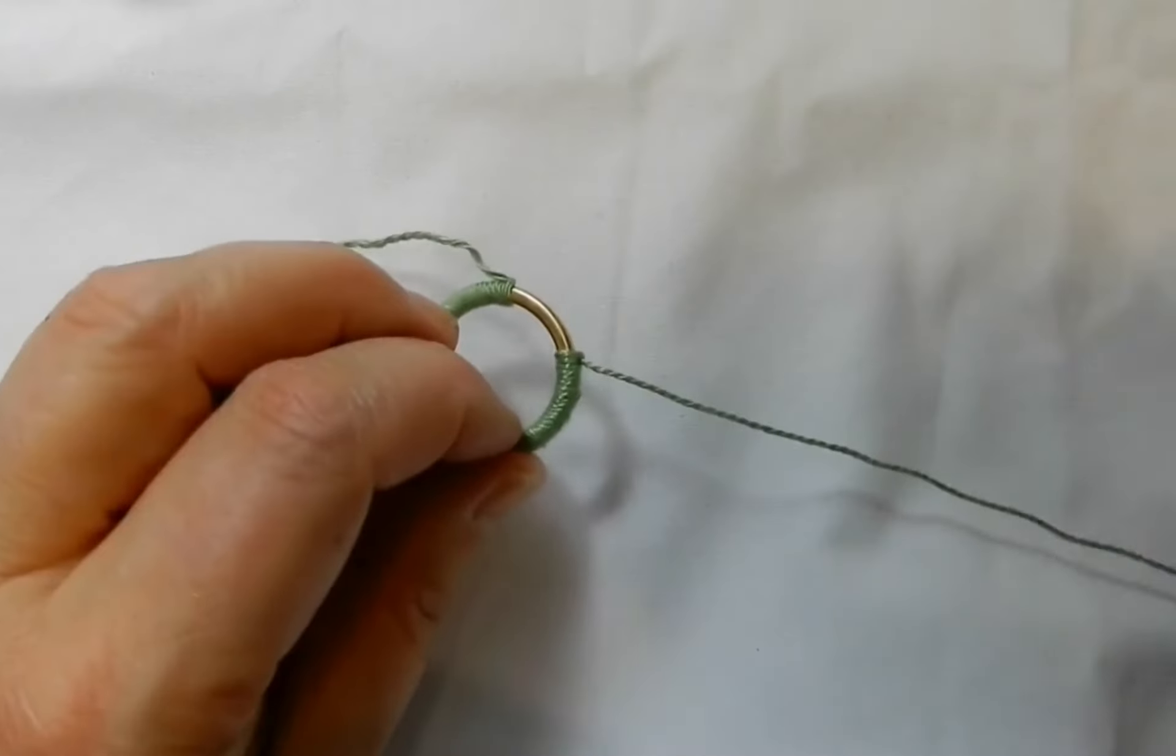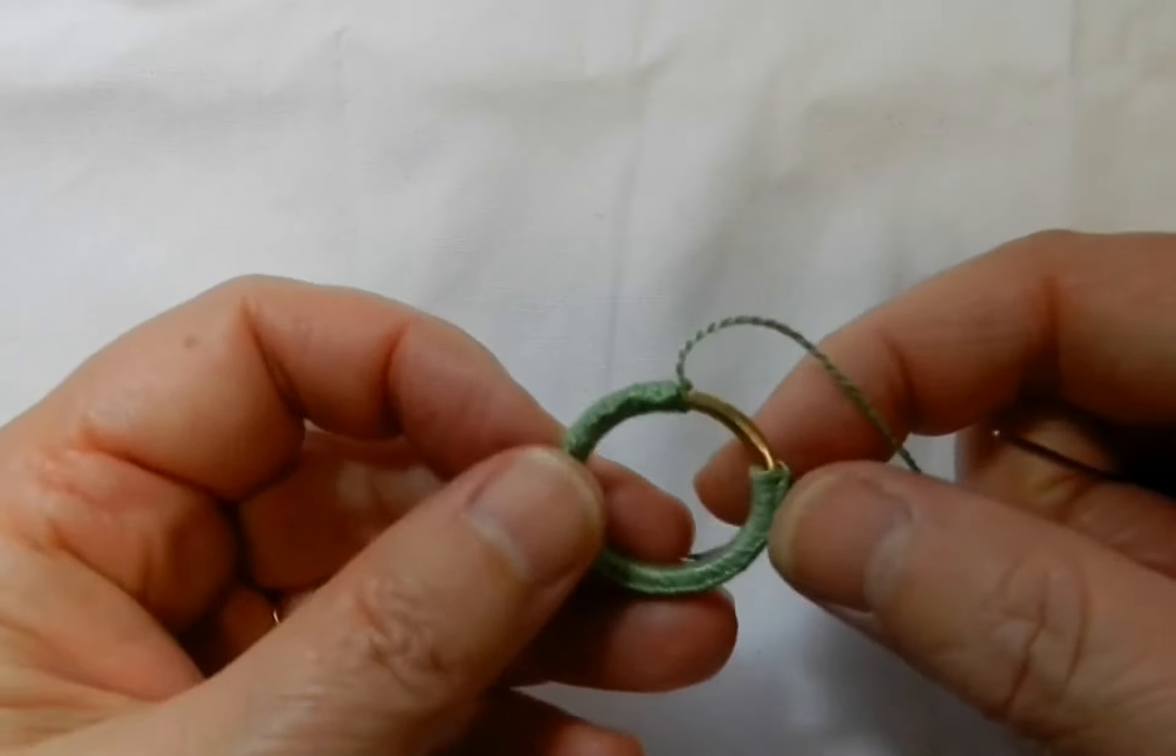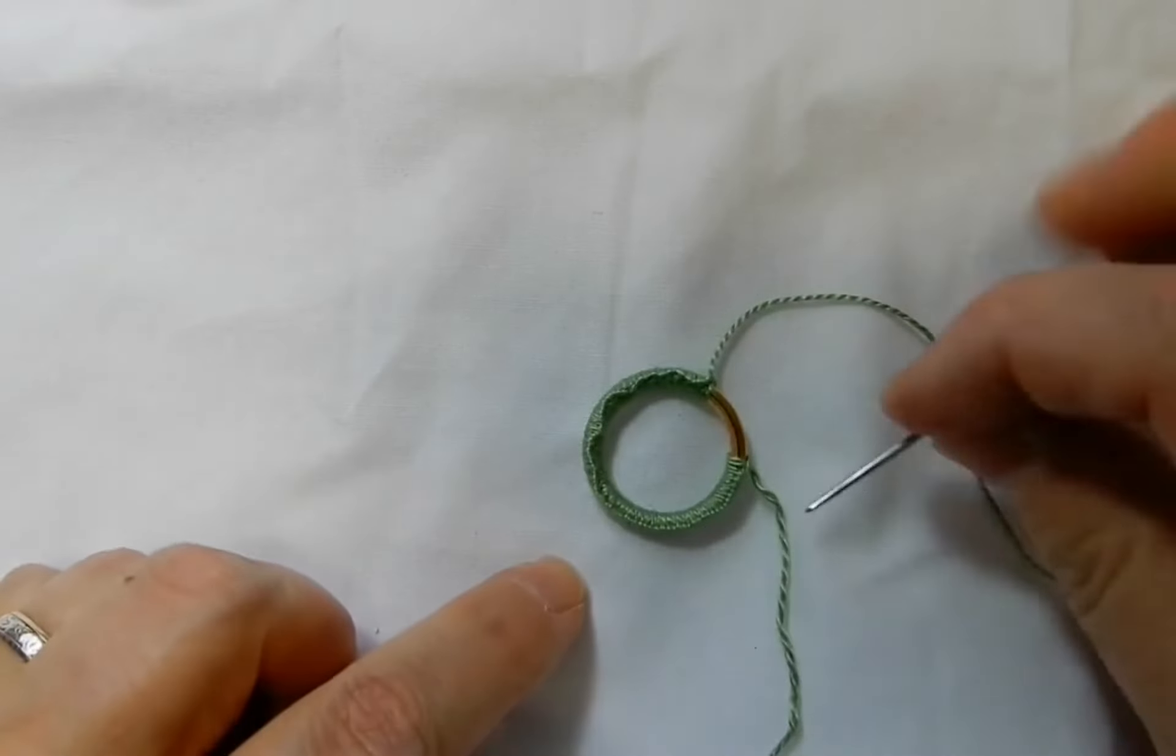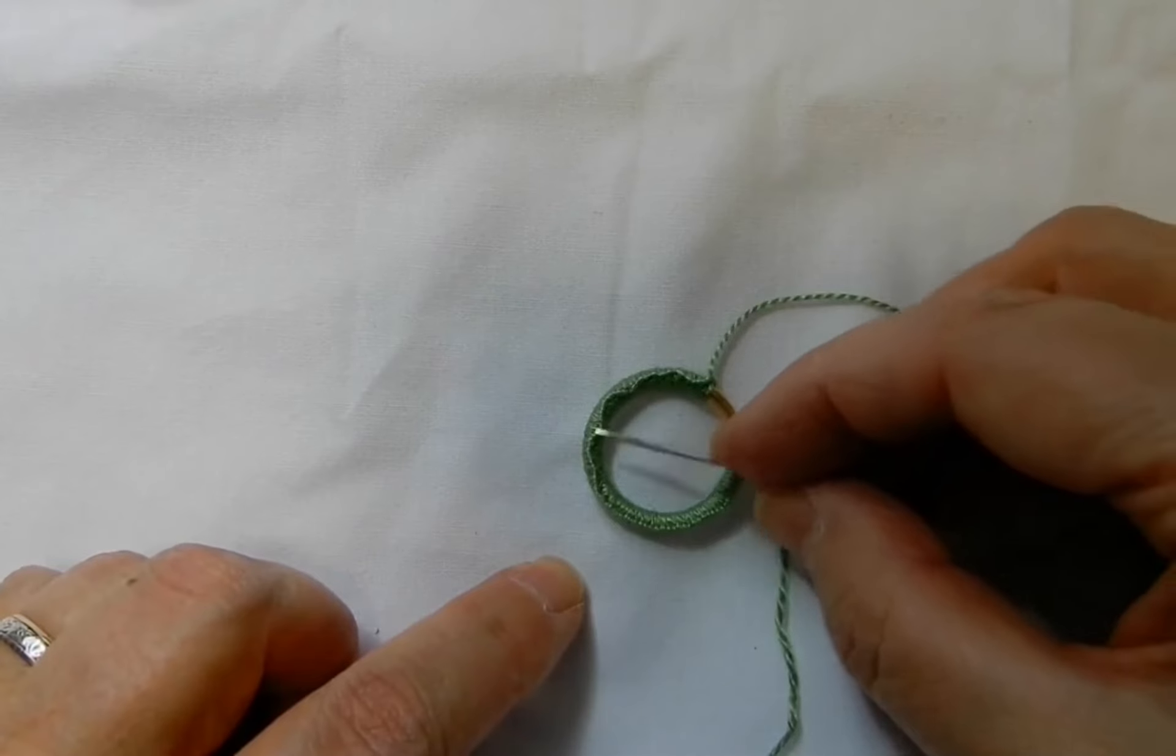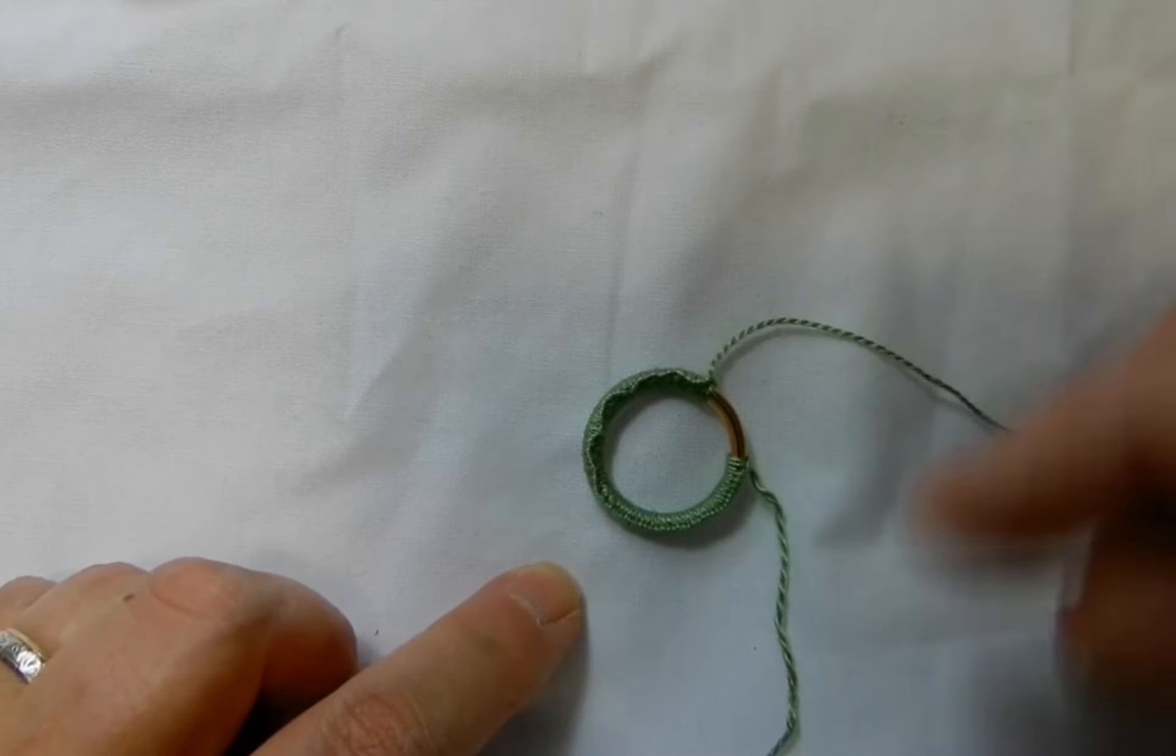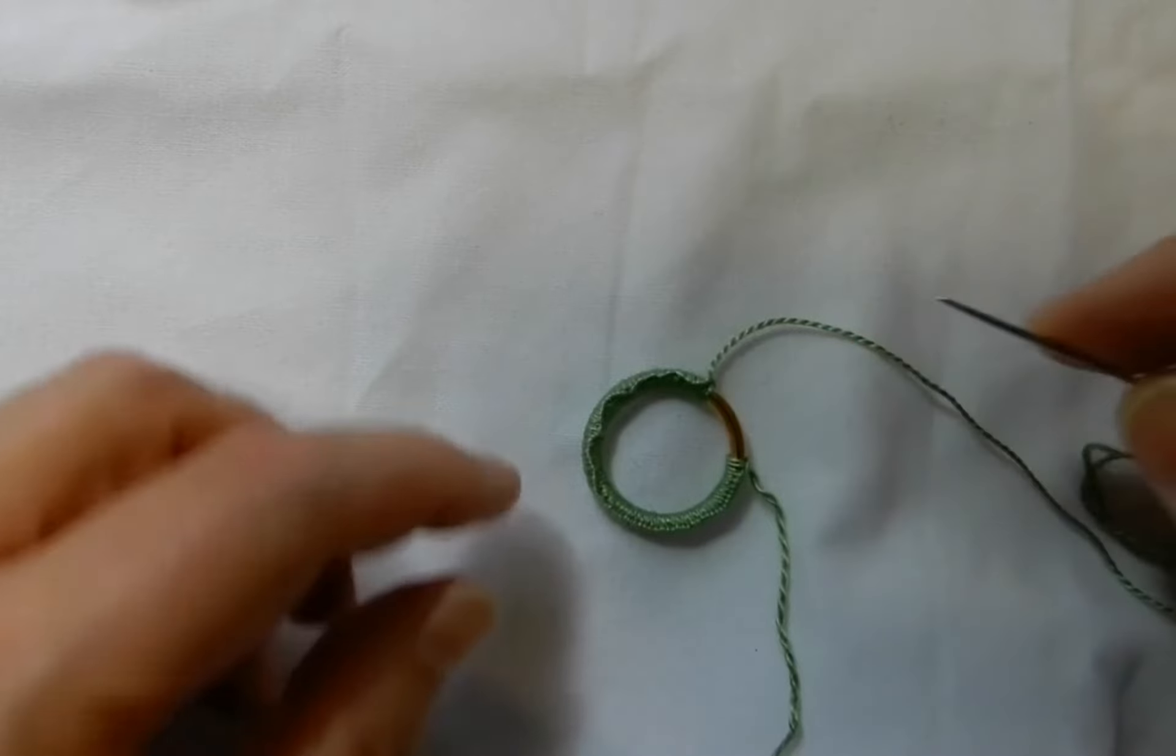Now with the needle on the long end of the thread, I'm going to turn this over. One thing you need to check is it doesn't matter if you've got a bit of a wiggle in this ridge here, but you must check that it isn't twisted around the ring. You must be able to see it all the way around on the same side.